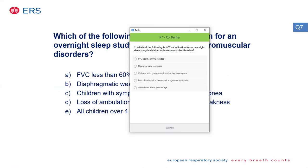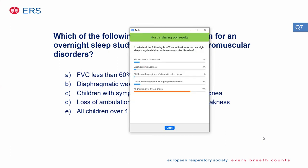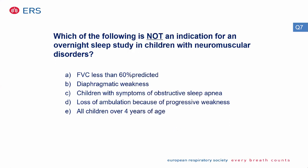Which of the following is NOT an indication for an overnight sleep study in children with neuromuscular disorders? FVC less than 60% predicted; diaphragmatic weakness; children with symptoms of obstructive sleep apnea; loss of ambulation because of progressive weakness; or all children over four years of age. The correct answer is all children over four years of age — this is actually recommended by the American Academy of Pediatrics for children with Down syndrome because OSA is so common in that population, but not for neuromuscular disease.